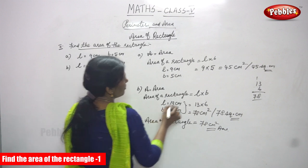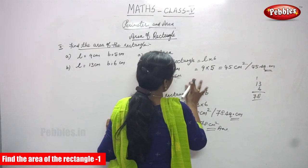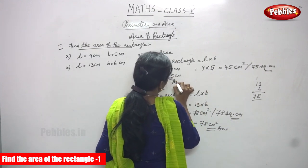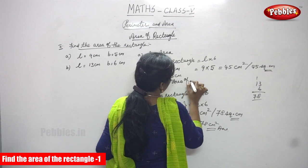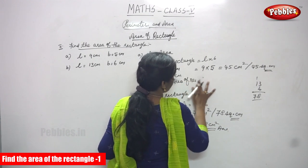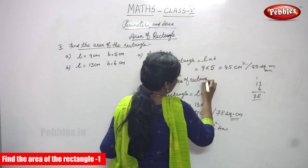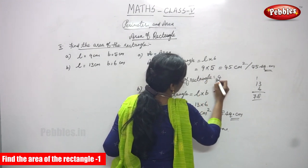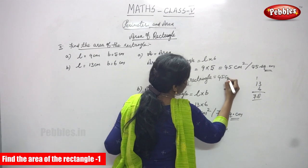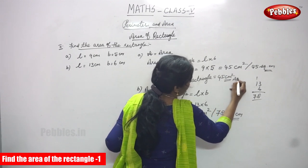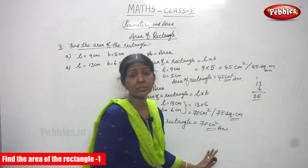This, for this sum, area of the rectangle is equal to, again you have to write, area of a rectangle, rectangle is equal to 45 cm square. This is the right answer for the question.